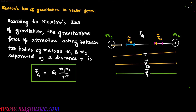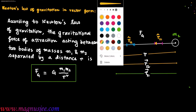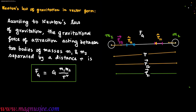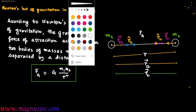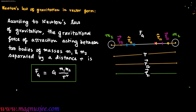In the diagram, vector F12 is the gravitational force of attraction experienced by the body of mass m1 due to m2. Similarly, vector F21 is the gravitational force of attraction experienced by the body of mass m2 due to m1.